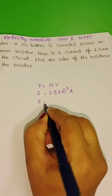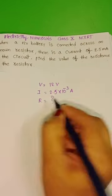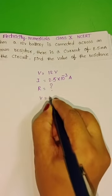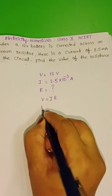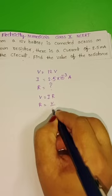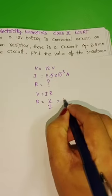We need to find the resistance. Take Ohm's Law: V is equal to IR. From this, R is equal to V by I.